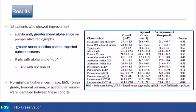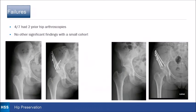There was no significant difference in age, BMI, tonus grade, femoral version, or acetabular version between the two cohorts. In the failures, four of the seven had two prior hip arthroscopies. However, looking at the data for every hip, there are really no significant findings we can identify in the cohort that did not improve.